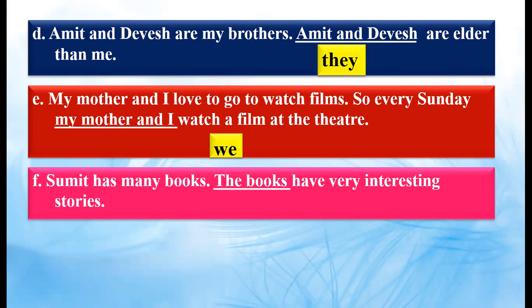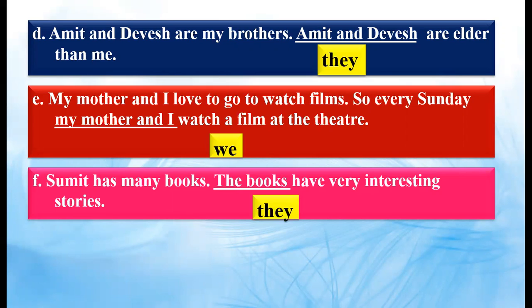Sumit has many books. The books have very interesting stories. Here 'the books' is underlined, so we have to use pronouns. It is written 'books', which means plural noun is there. So we have to use T-H-E-Y, 'they', over here. Because a person cannot be a book. So we are going to say 'they have very interesting stories'.